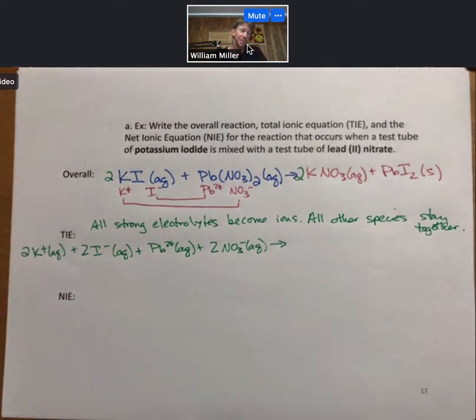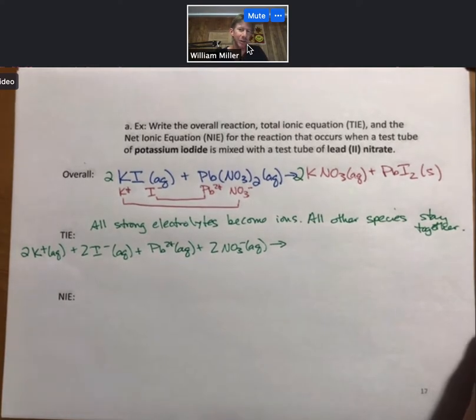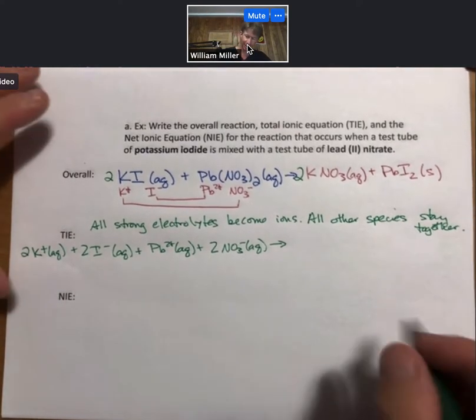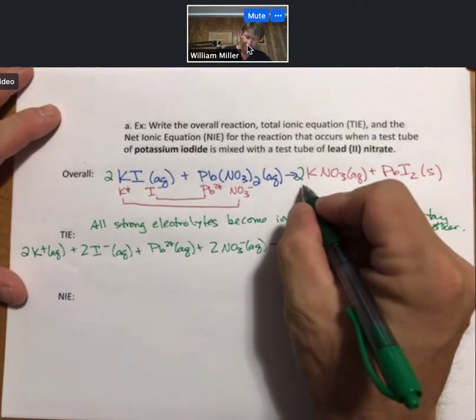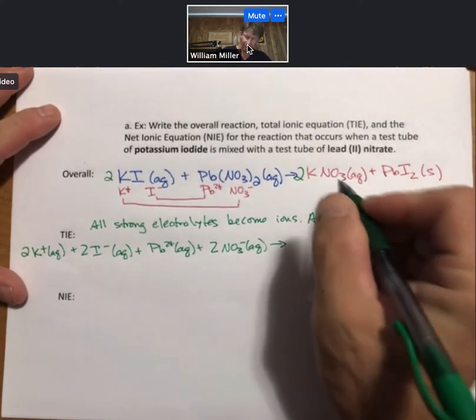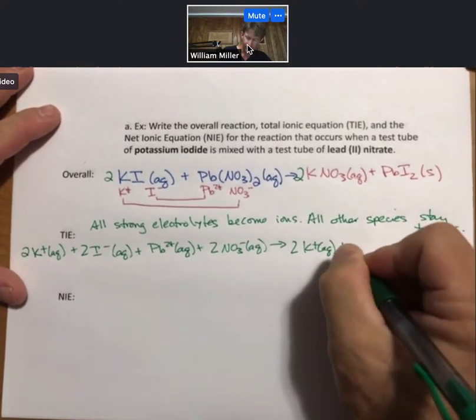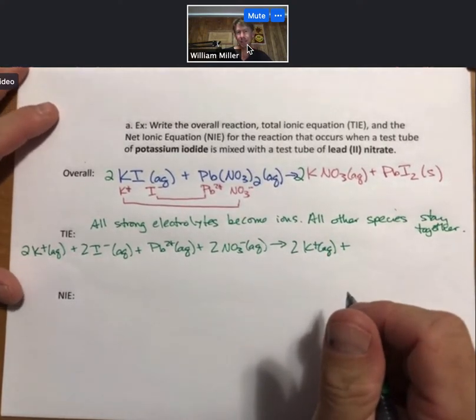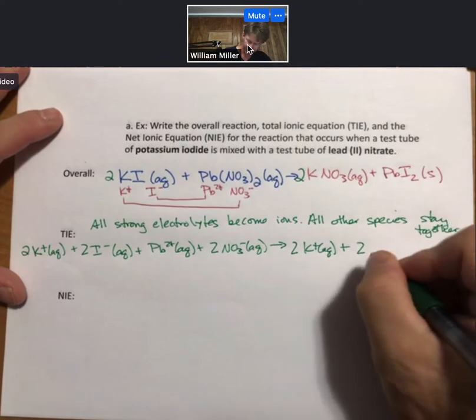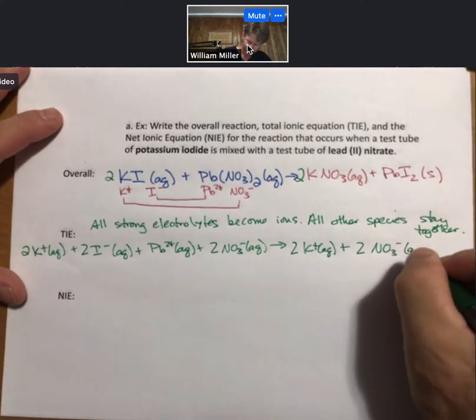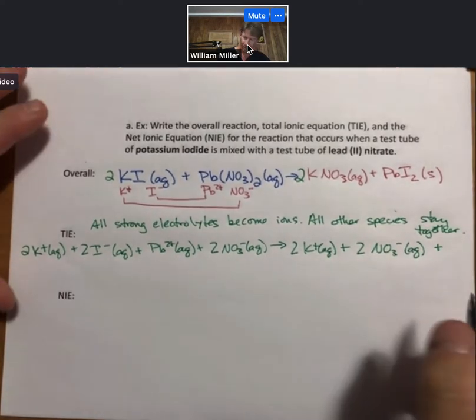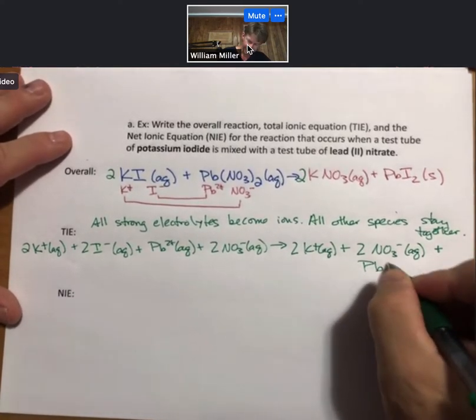They're actually two separate solutions. We haven't mixed them together yet. When we do mix them together, some things don't change. The potassium and the nitrate are still aqueous ions floating around in solution.